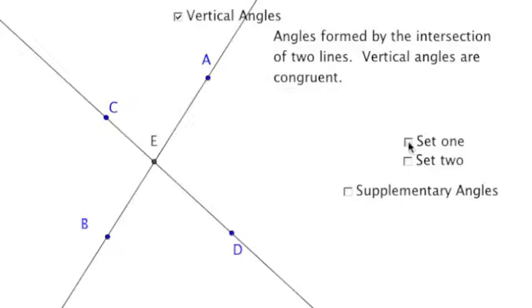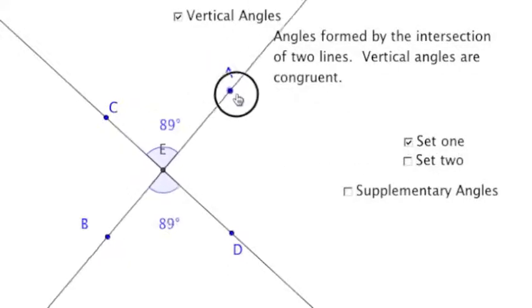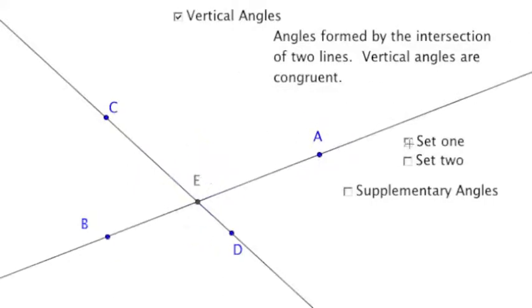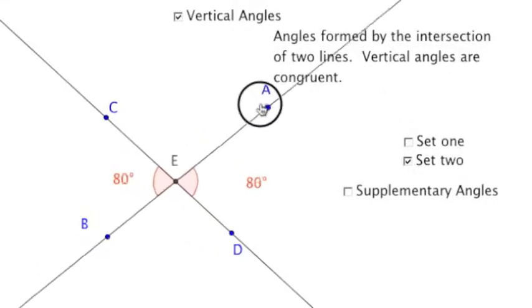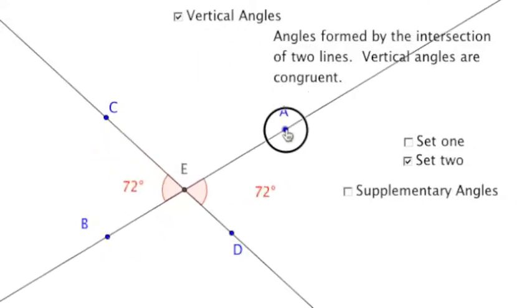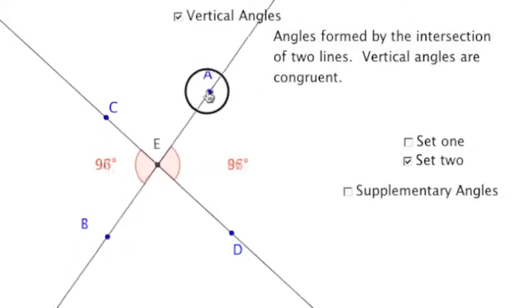So for these two lines we're going to actually have two sets of vertical angles. Here's our first set, and here is our second set. Notice that the angles remain congruent.